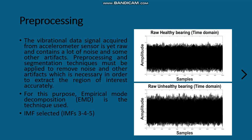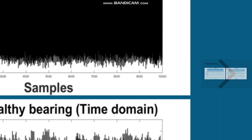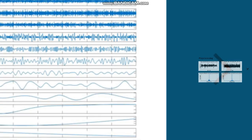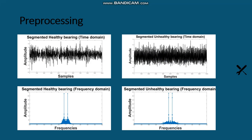The first IMF contains the highest frequency and a lot of noise compared to others. The last IMF contains the lowest frequency, and finally the residual contains the trend of the signal. As you can see, these plots show the healthy bearing and unhealthy bearing EMD, containing the original signal, all the IMFs, and the residual. Additional plots show the segmented healthy and unhealthy bearing in both the time domain and frequency domain.